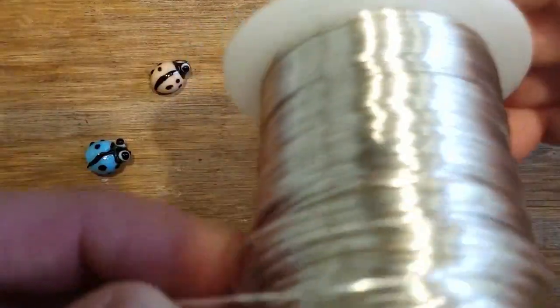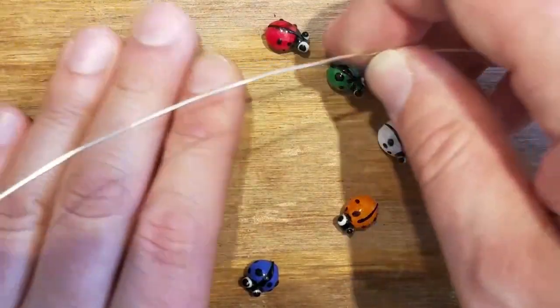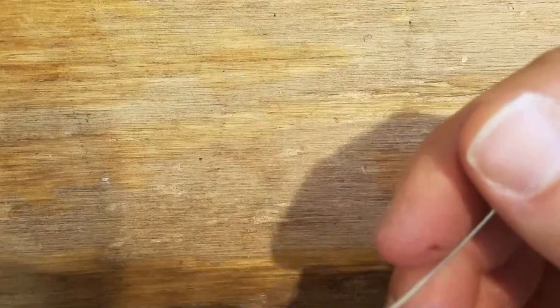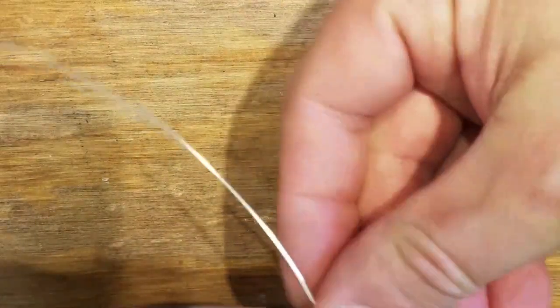Then you can get some 20 gauge silver and you can make yourself a ladybug ring. About one foot, pick your ladybug, put it through to the middle. Once you get there, give it a good crimp, crimp.